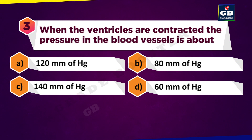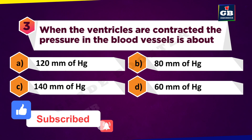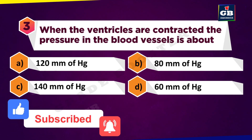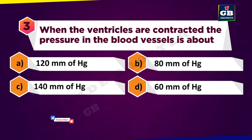When the ventricles are contracted, the pressure in the blood vessels is about: A. 120 mm of Hg, B. 80 mm of Hg, C. 140 mm of Hg, D. 60 mm of Hg.